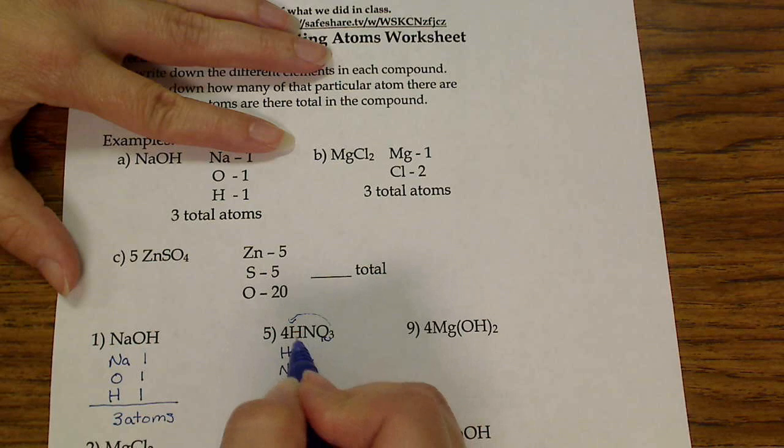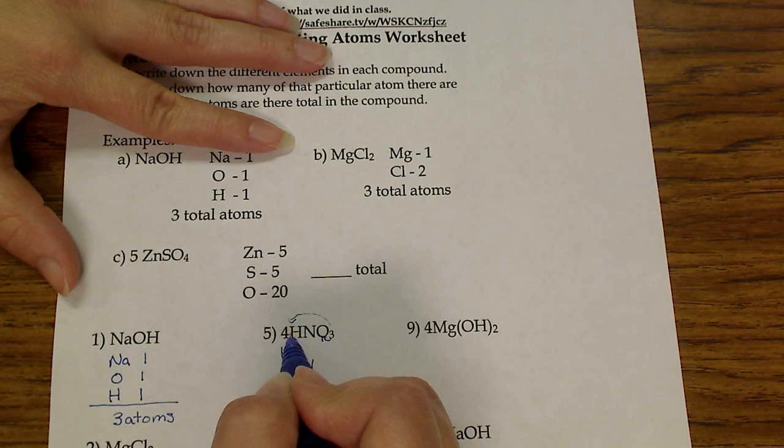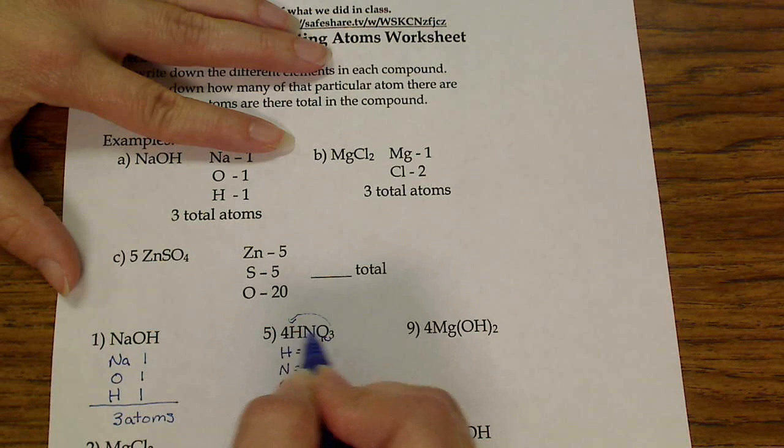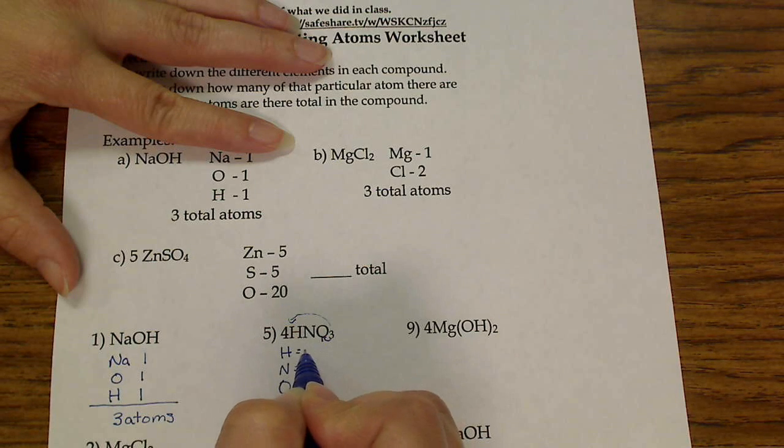And then the same for hydrogens. It doesn't have its own subscript, so it's an automatic one, times the four, because there's four of these molecules. So four times one is four hydrogens.